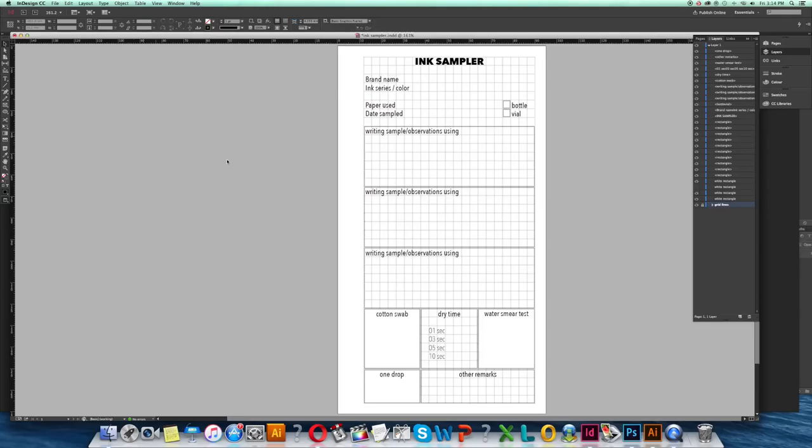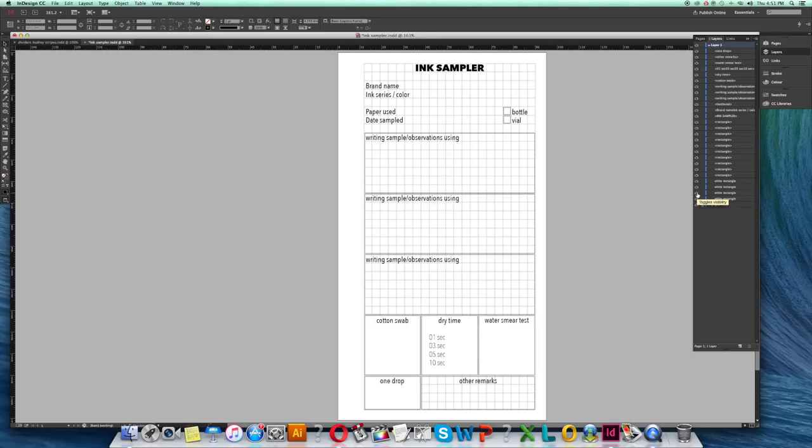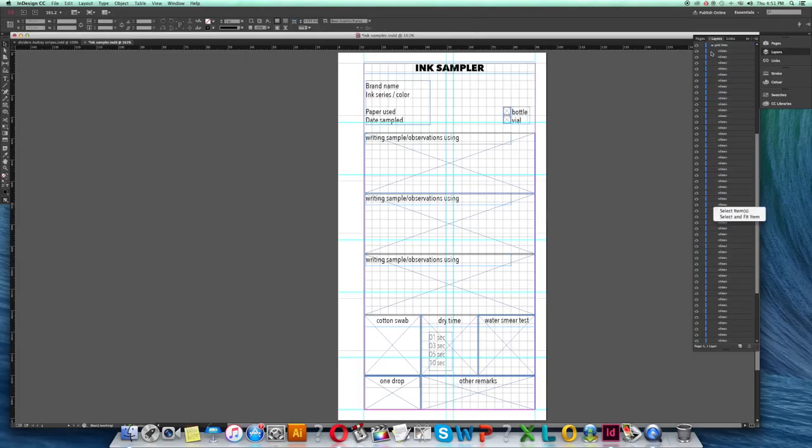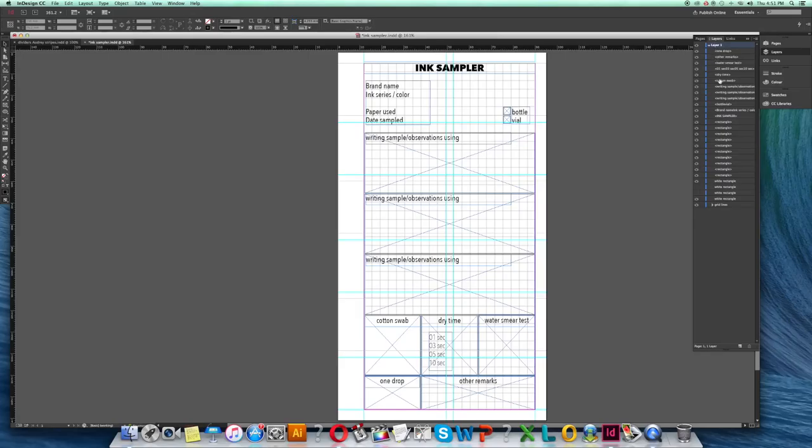Another reason why I chose personal size paper for this ink sampler book is that I want this to be loose leaf so I can rearrange the pages whenever I want to. Maybe I can group all the reds together and so on and so forth, or maybe I want to group them by brand or by series. It really depends. I'm not yet sure how the pages are going to be arranged, but I like that this is going to be loose leaf so I can be free to decide and change my mind as often as I want. That's also why there's a rather wide margin on the left of each page—that's where the holes are going to go.